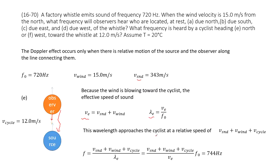Now we look at the wavelength as it approaches the cyclist. We have the effective speed of sound and also the speed of the cyclist. We need to add these three together because they approach each other — approaching each other makes the frequency increase. So the total speed divided by the effective wavelength gives the final answer for this frequency.